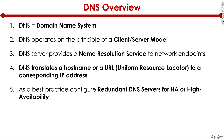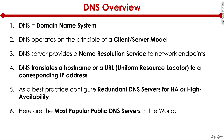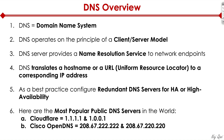As a best practice, configure redundant DNS servers for high availability. Here are some of the most popular public DNS servers in the world. My personal favorite is Cloudflare — it's actually a pair of DNS servers. Primary is 1.1.1.1 and secondary is 1.0.0.1. They claim to be the fastest DNS servers on Earth. Next is Cisco OpenDNS, now part of Cisco Umbrella, which provides security services on top of DNS with malware protection.